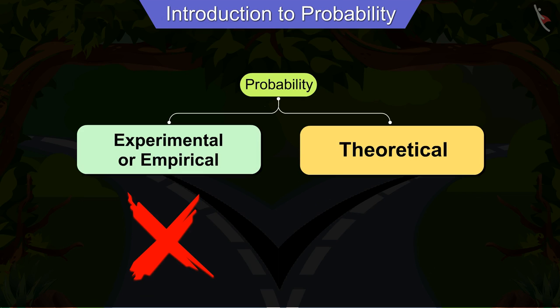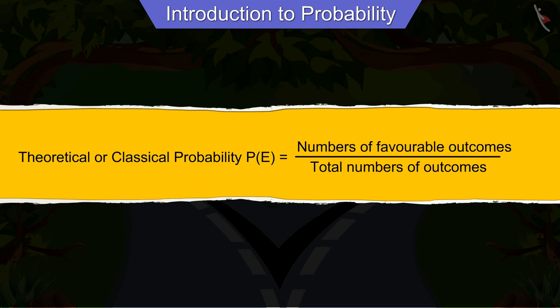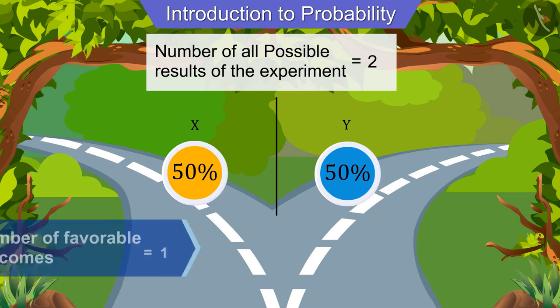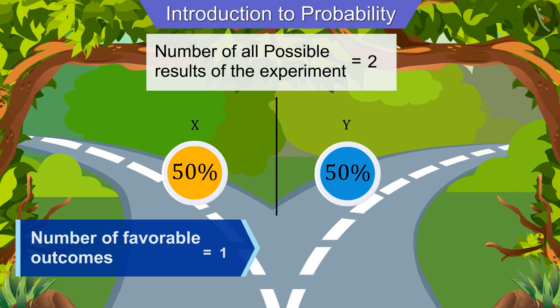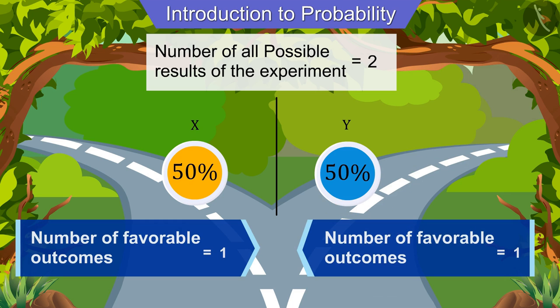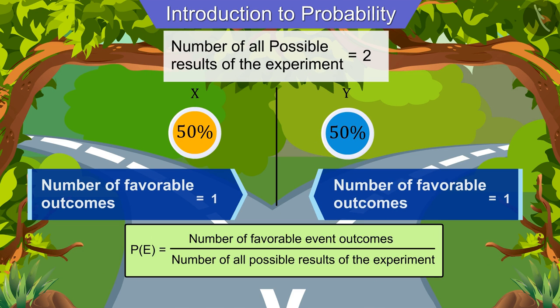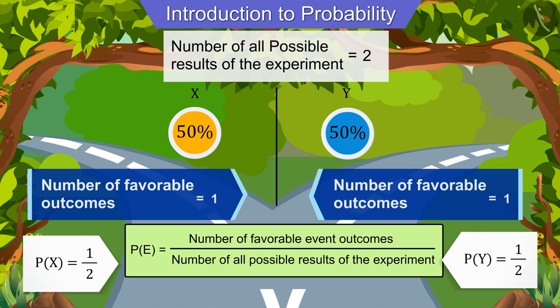In such situations we take the help of theoretical probability, which is also known as classical probability. We use this formula to find the value in numerical form. In Joseph's position we have a total of two outcomes. If Joseph chooses road X, the number of favorable outcomes will be one; similarly, choosing road Y will also have one favorable outcome. From the formula of theoretical probability, the probability of choosing both roads is one upon two.